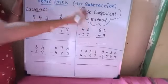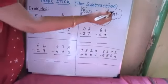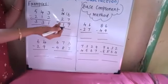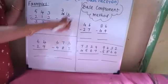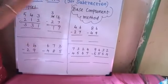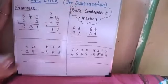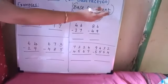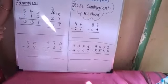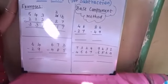Today what I am going to introduce is called the base complement method. When children find difficulty borrowing numbers, we can use this method. Here, we are going to actually add the values and get the answer, especially in subtraction.